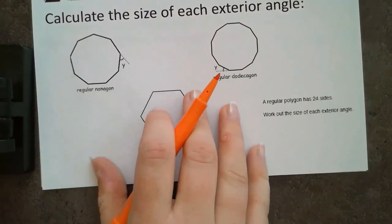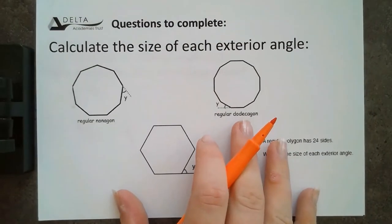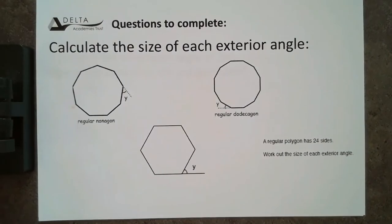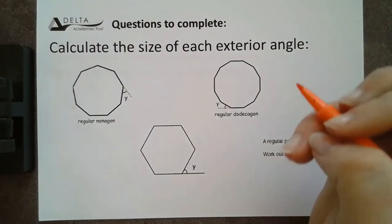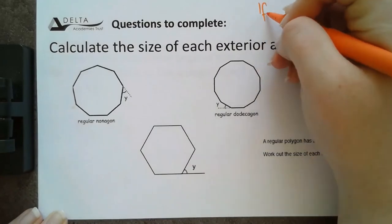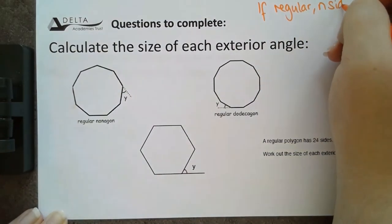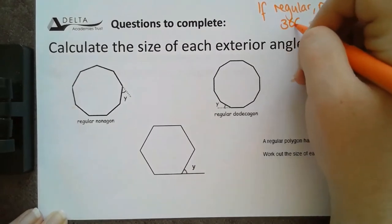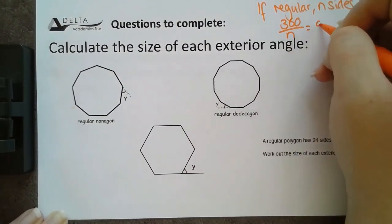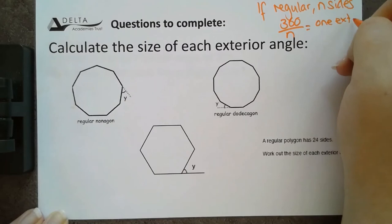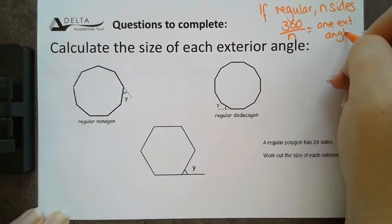I want you guys to have a go at using that formula to help you with these questions. So, if you haven't already, give that a go now. Remembering that if it's regular and N sides, we have 360 over N for one exterior angle. Give the video a pause and try those now if you haven't already.